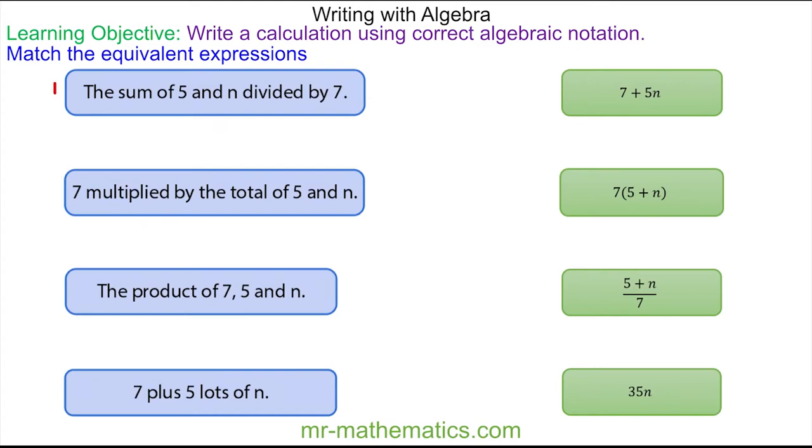We'll look at this one first, which we'll call a. It is the sum of 5 and n, which we write as 5 add n, and then divided by 7. In algebra, we don't write the divide, we write as a fraction, so it is 5 add n over 7. This one matches with this one here.